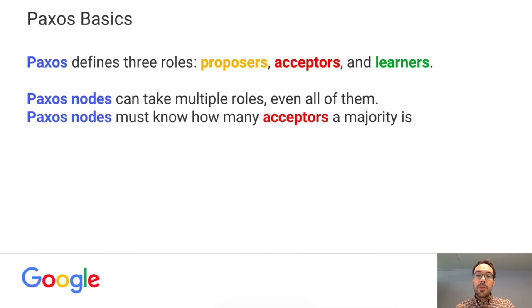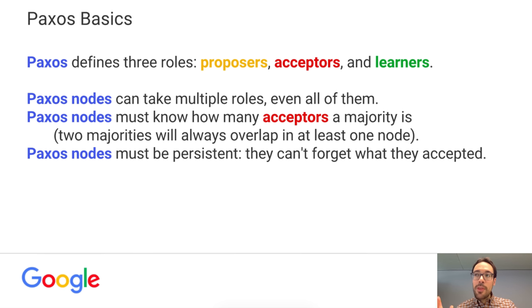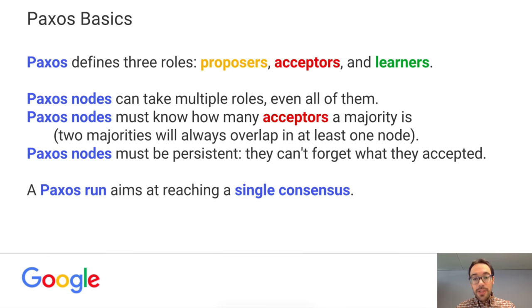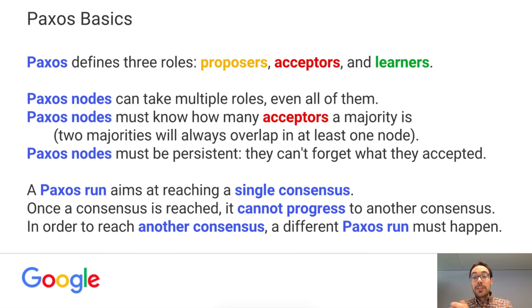Paxos nodes must know how many acceptors a majority is. This is important because of a property: two majorities will always overlap in at least one node. We will see this being needed several times through the algorithm in order to guarantee a set of properties. Paxos nodes must also be persistent — even though communication channels may be faulty, Paxos nodes cannot forget what they accepted. There are variants of Paxos that can deal with that, but vanilla Paxos won't. A Paxos run aims at reaching a single consensus — you can only agree on one value. Once a consensus has been reached on a certain value, it won't progress to any other different value. Which means if you want a value to mutate over time, a different Paxos run must happen.